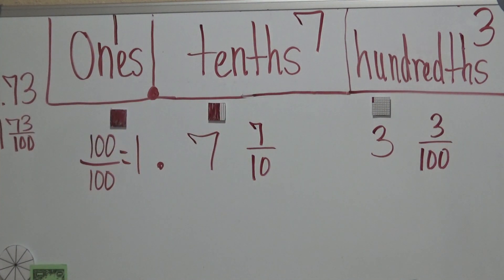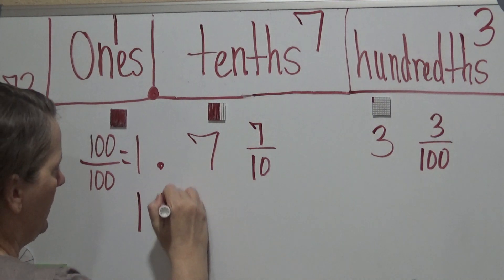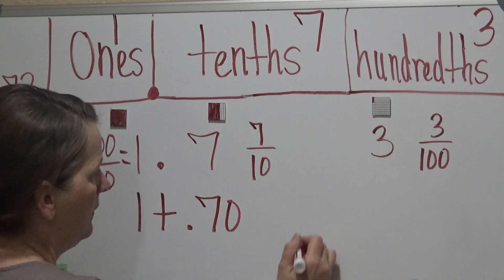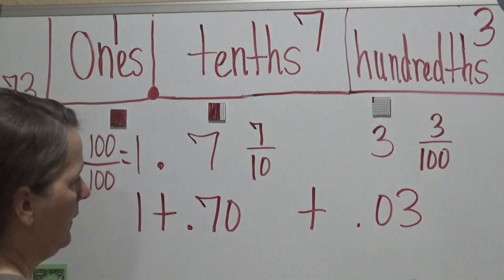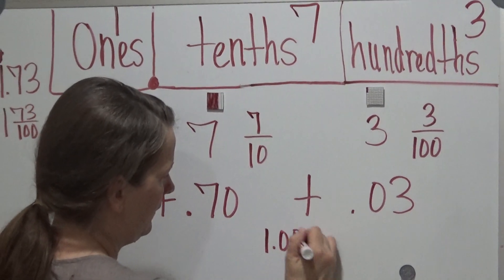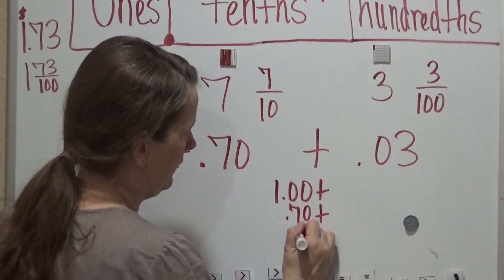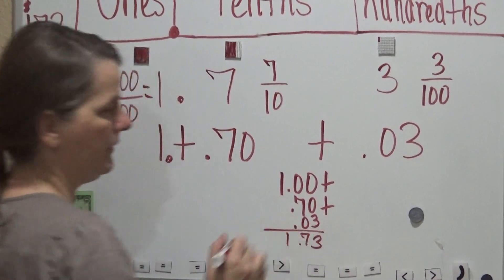Now, how would that look as far as doing this with expanded form? It would be 1 plus .70 plus .03. And when you line that up, it would be $1 plus .70 plus 3 cents, which gives you $1.73.